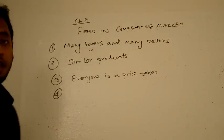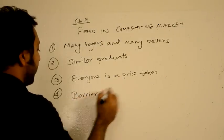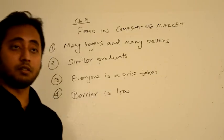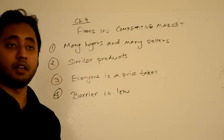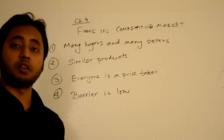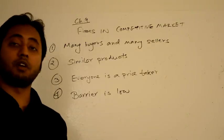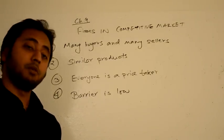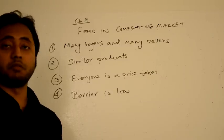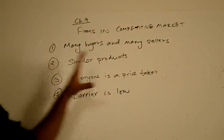The fourth characteristic is that the barrier to entry is pretty low. It basically means that the transaction cost in the market is negligible or zero. If you want to enter the market, it's free. If you want to exit the market, it's free. There's not really any transaction cost. So these four characteristics define a competitive market.